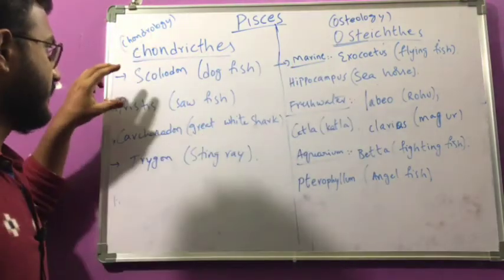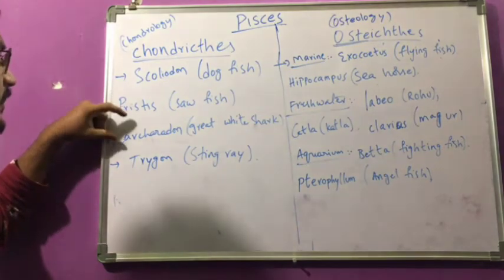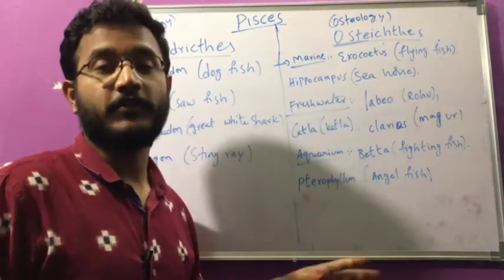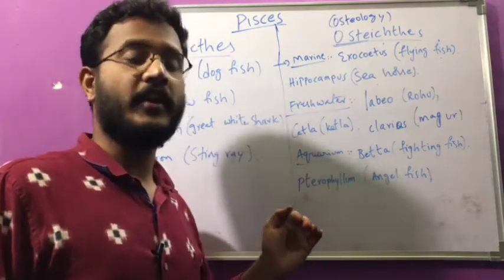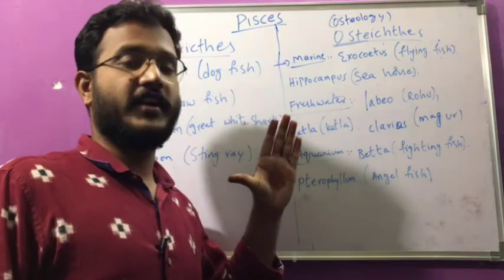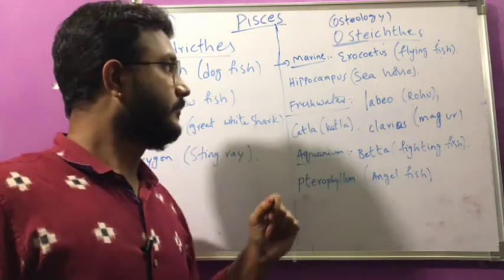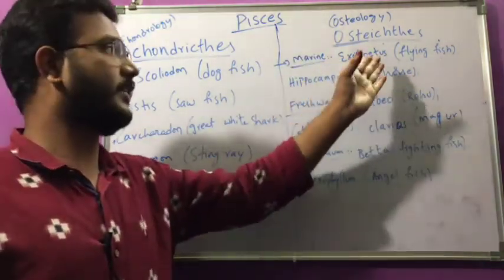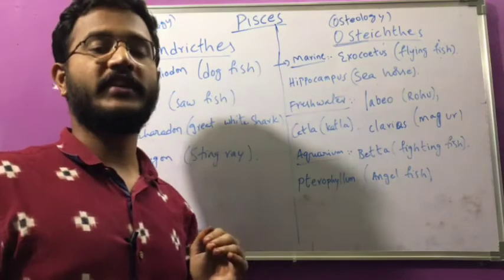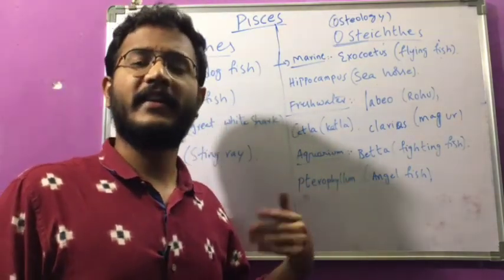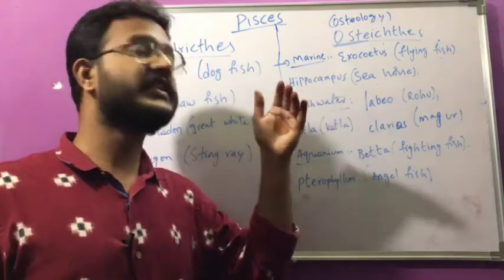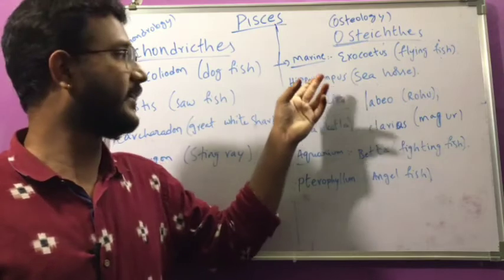To recap: Chondrichthyes examples are Scoliodon (dogfish), Pristis (sawfish), Carcharodon (great white shark), and Trygon (stingray). Whales are not fish — they belong to mammals. Regarding Hippocampus: normally females breed and lay eggs, but in the case of Hippocampus, males have a brood pouch and they carry the eggs — this is an important exception.